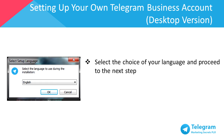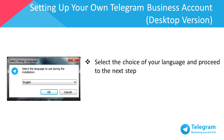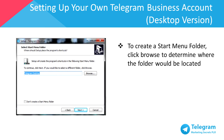Select a choice of your language and proceed to the next step. Select your desired location to install Telegram. If you'd like to create a Start menu folder, click Browse to determine where the folder will be located. If you don't intend to create a Start menu folder, just click Next.